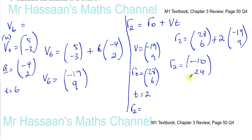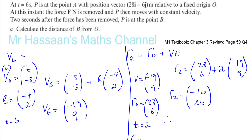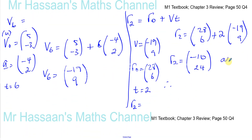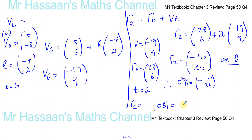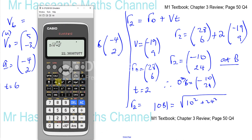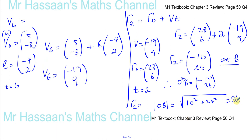They're asking for the distance from O to B. The position vector of B is the vector OB = (minus 10, 24). So the magnitude of OB is the square root of 10 squared plus 24 squared, which gives us 26 meters.